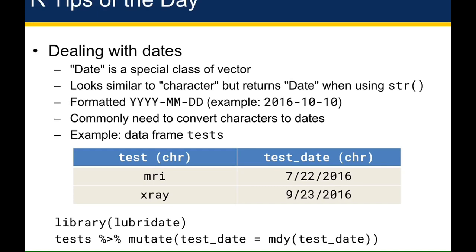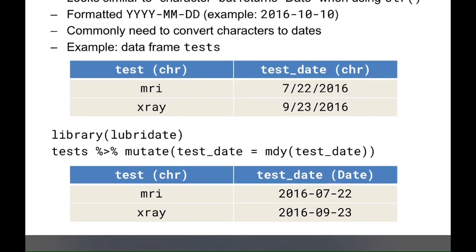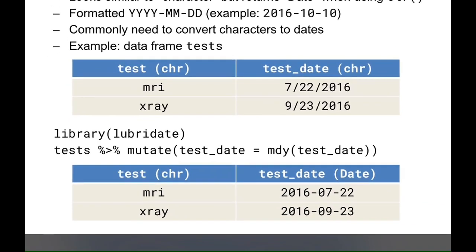If you run that series of pipes on the test data frame, you'll get back the correctly coded test_date, which is now formatted properly starting with the year, the month, and the date. But also importantly, the type of data is now denoted as a date.